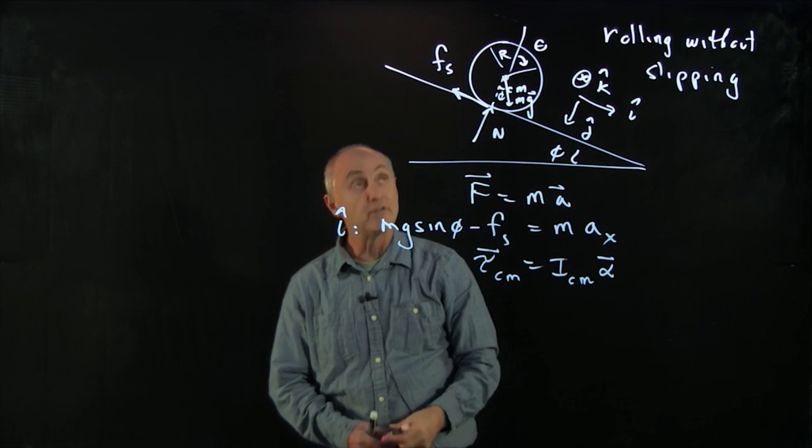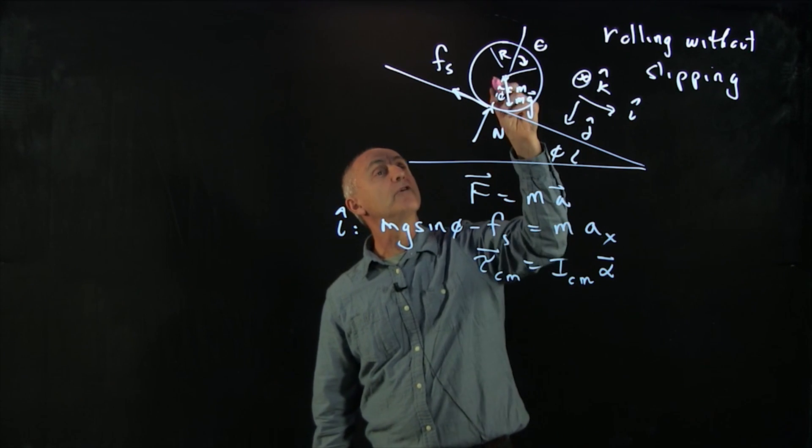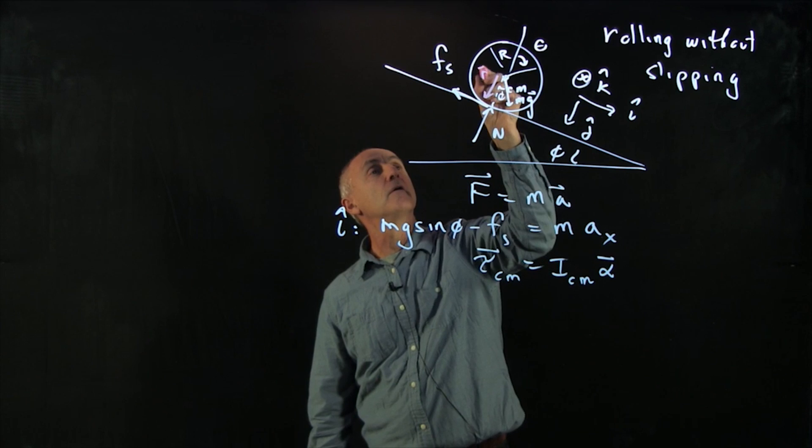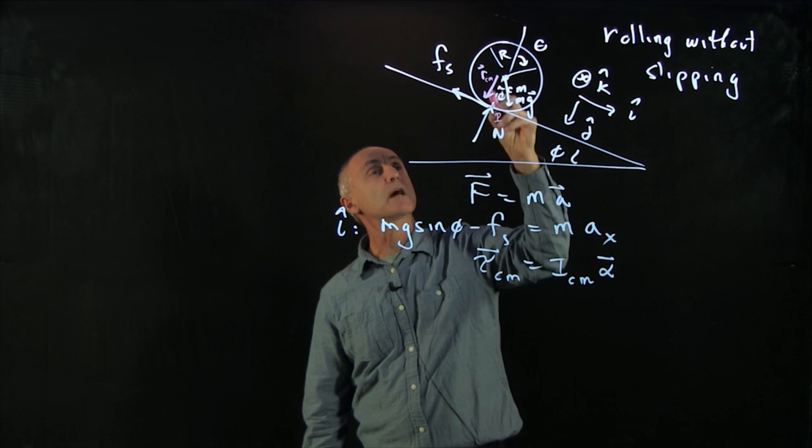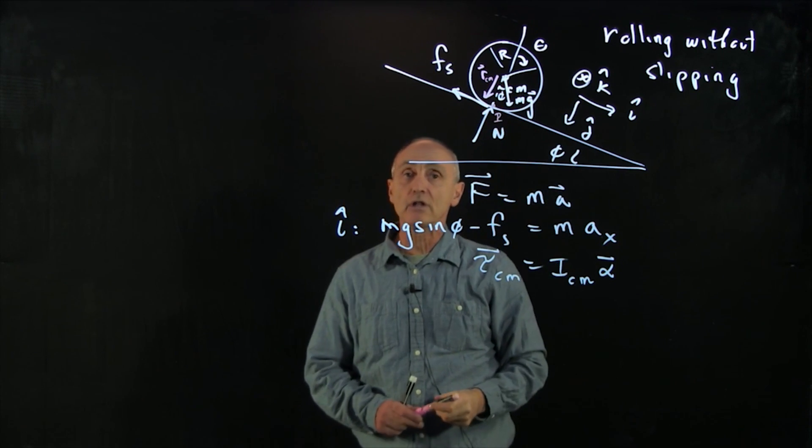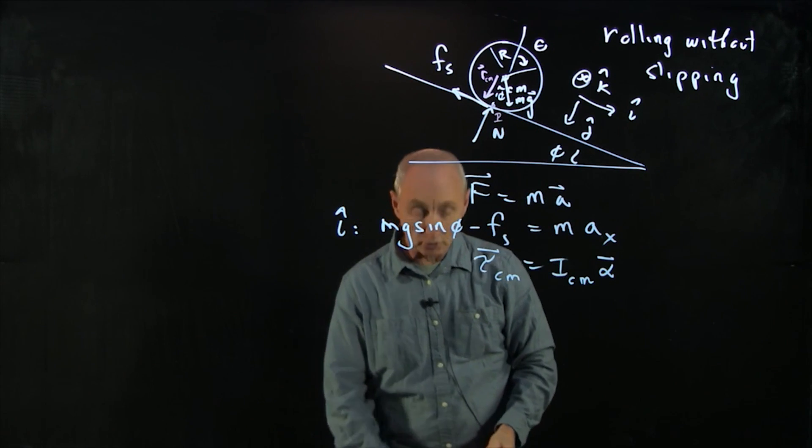The normal force is directed towards the center of mass. And so when we take that vector product of r cross n from cm to this point down here, the contact point, these forces are antiparallel. So the normal force produces no torque.